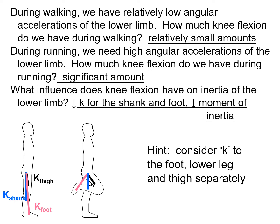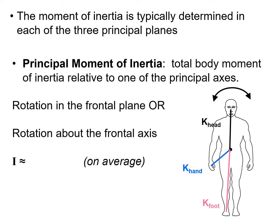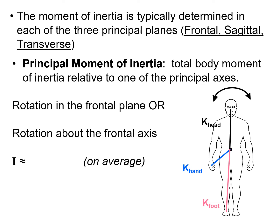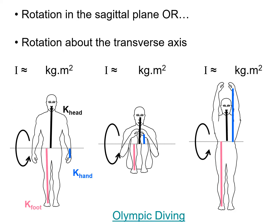When we decrease the radius of gyration for the shank — our lower leg and foot — we are decreasing the moment of inertia, so we use much less energy on that forward swing. The moment of inertia is typically determined in each of the three principal planes: the frontal, sagittal, and transverse planes. The principal moment of inertia is the total body moment of inertia relative to one of our principal axes. In the frontal plane we might have about 10 kg·m²; in the sagittal plane also around 10 kg·m², dropping to about 2.5 kg·m² if we tuck up our arms and legs.